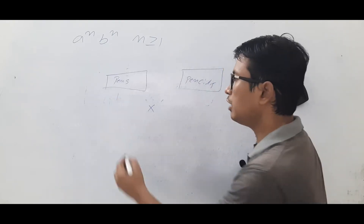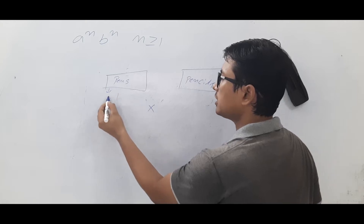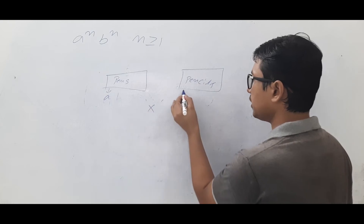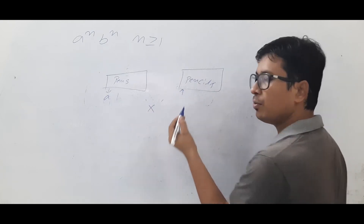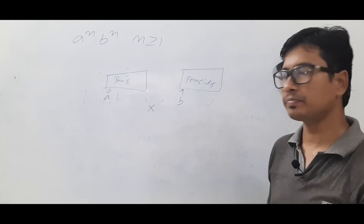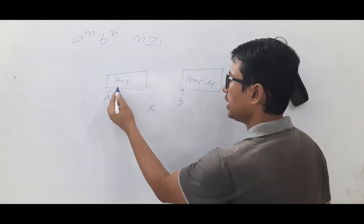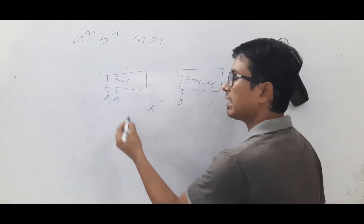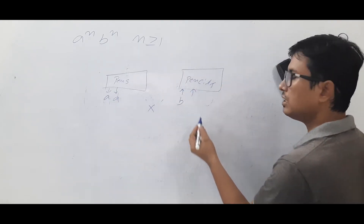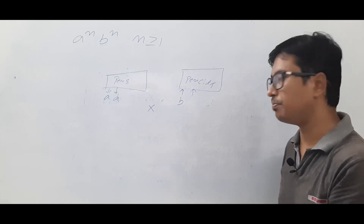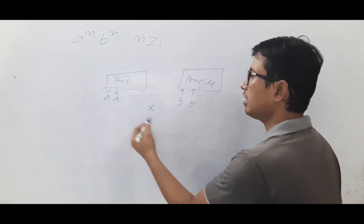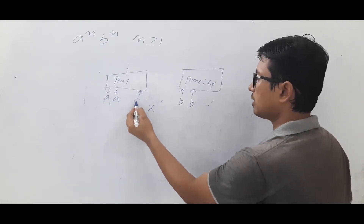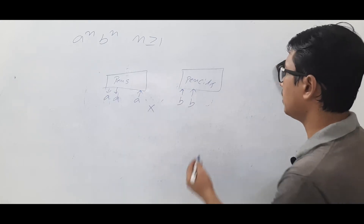He will open the pen box, take one pen, and mark it as A. Then he opens the pencil box, takes one pencil, and marks it as B. Again he takes an unmarked pen, marks it as A, then takes an unmarked pencil and marks it as B. He repeats this process.